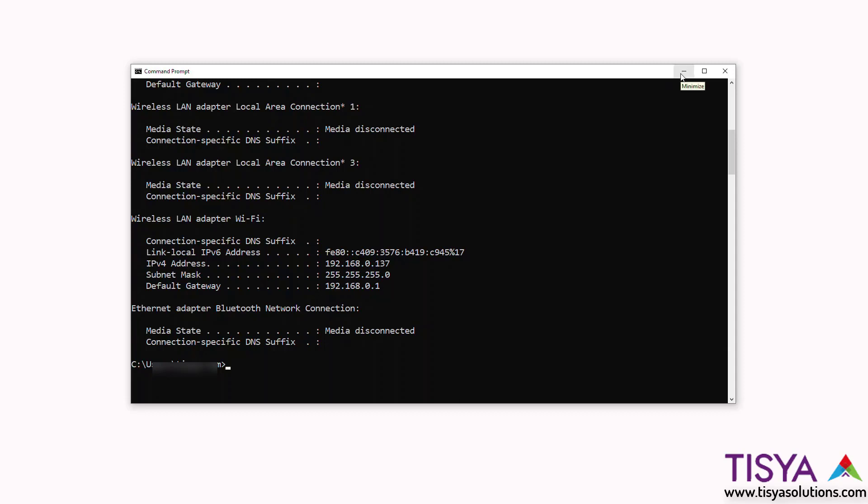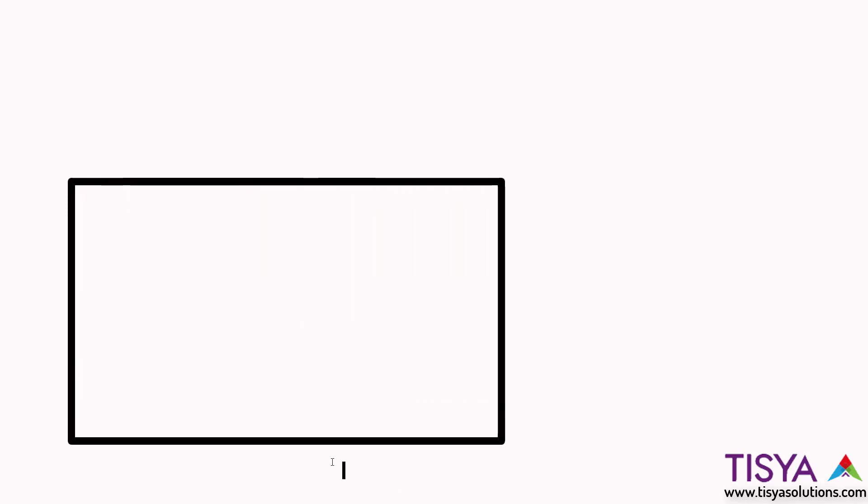So why did it associate this specific address to my computer? It goes back to the idea of computers getting IP addresses associated. We will look at how your computer gets an IP address automatically when we look at DHCP options. But right now, the idea is to understand how did this range of IP addresses come in. To understand this, when you create a network, one of the fundamental questions you need to ask is to identify its CIDR.